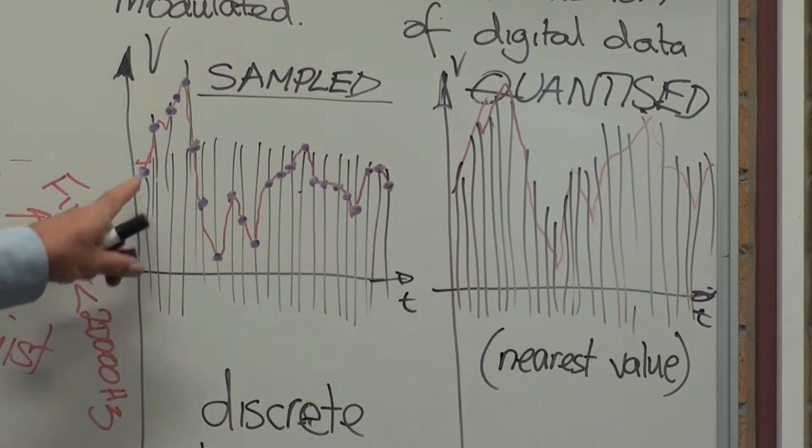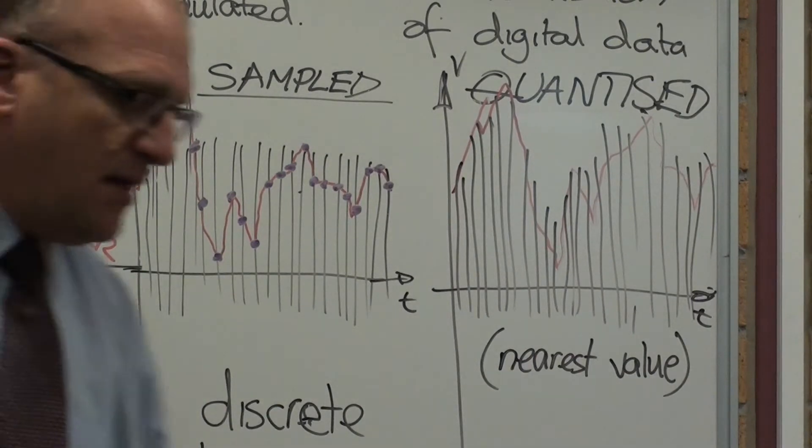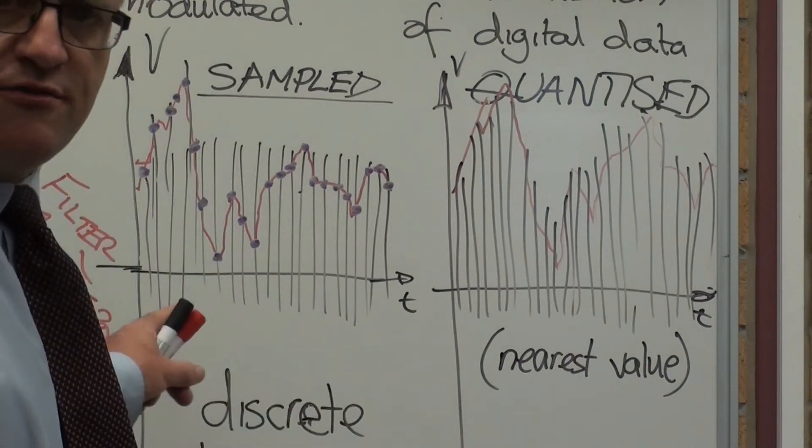Now, as you can see, the sampling, we have a series of dots there. They now know basically what voltage value that is.